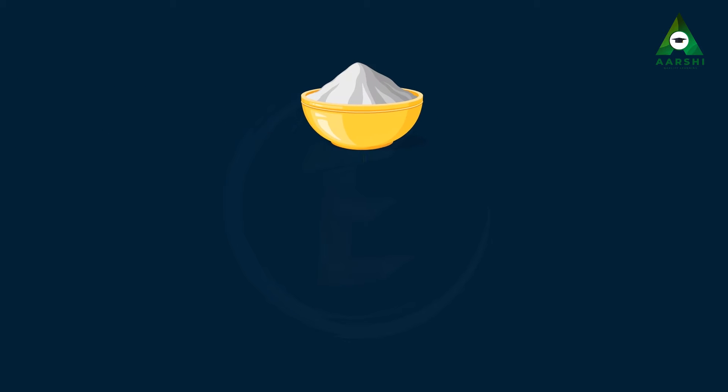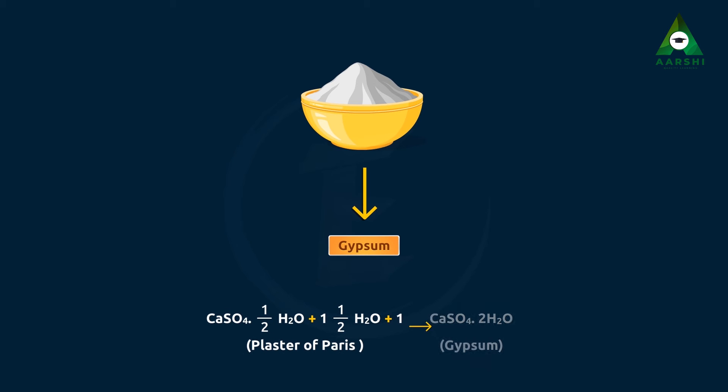Plaster of Paris is again converted into gypsum when water is added. CaSO4·½H2O plus 1½H2O gives CaSO4·2H2O, which is gypsum.